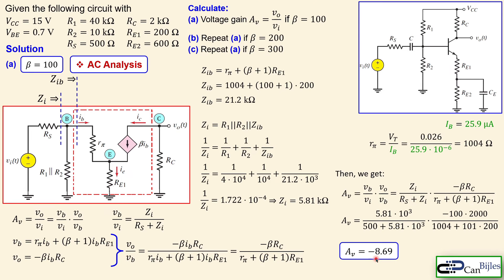Comparing the results: in example two the gain was minus 2.3, in example three it was approximately minus 150, and now it is minus 8.7. So the gain has reduced significantly from example three, but it is larger than example two. The advantage is that this will create a stable voltage gain, as we will verify shortly by varying beta to 200 and 300.